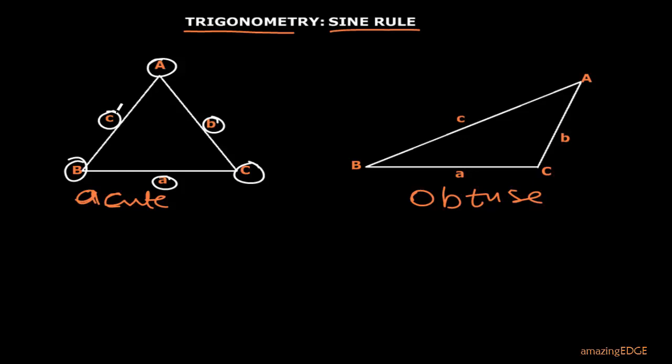In the second triangle, the obtuse triangle, the same convention applies. The capital letters A, B, and C are the angles, while small letter a is the side facing angle A, small letter b is the side facing angle B, and small letter c is the side facing angle C.